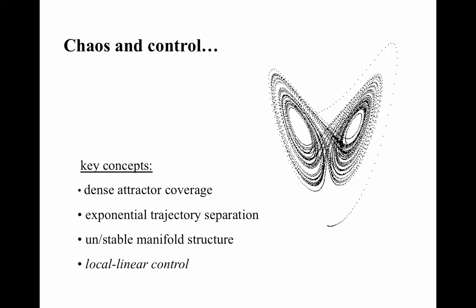Here are the concepts from the previous nine units of this course that will play a role in this discussion. We're going to use sensitive dependence on initial conditions for leverage. And we're going to use the denseness with which trajectories cover chaotic attractors to prove that we can actually get where we want to go. And we're going to use the stable and unstable manifold structure to stabilize ourselves once we get there.